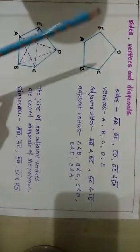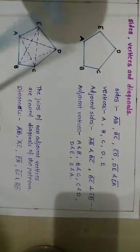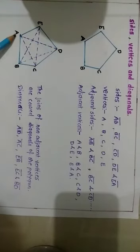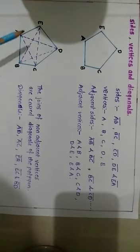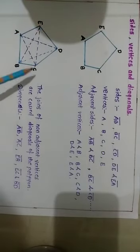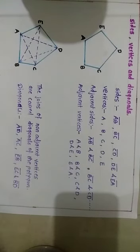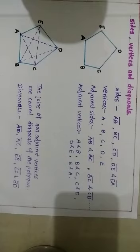Now let us understand what we mean by diagonals. We have seen that the end points of the same side are called adjacent vertices. But when we join non-adjacent vertices, we get diagonals. As you can see in the figure, points A and D are not adjacent vertices, so if we join these two points we get a diagonal. Similarly, BE, EC, and BD are also diagonals. So diagonals means the joining of non-adjacent vertices of a polygon. In this way you can identify curves, open and closed curves, polygons, and the sides, vertices, and diagonals of any closed figure.